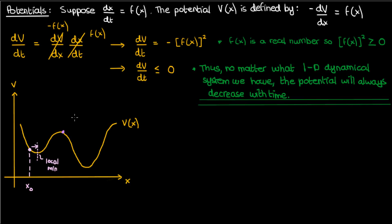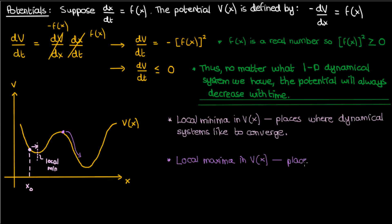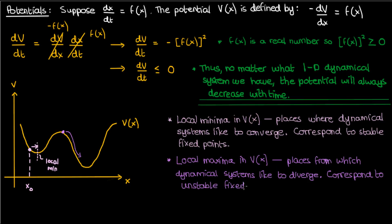But what happens if I start out at this local maximum in potential, and I deviate my x slightly away from this local maximum? Well, then because the potential tends to decrease, my x would shoot down towards a lower value of potential. So from these quick thought experiments, we can see that local minima in potential are places where dynamical systems like to converge, and local maxima in potential are places from which dynamical systems like to diverge. So the local minima and local maxima in V(x) are very similar to stable and unstable fixed points. In fact, local minima in V(x) correspond to stable fixed points of the dynamical system, and local maxima in V(x) correspond to unstable fixed points.